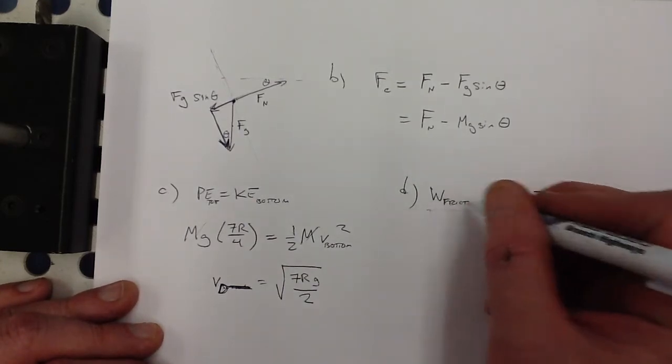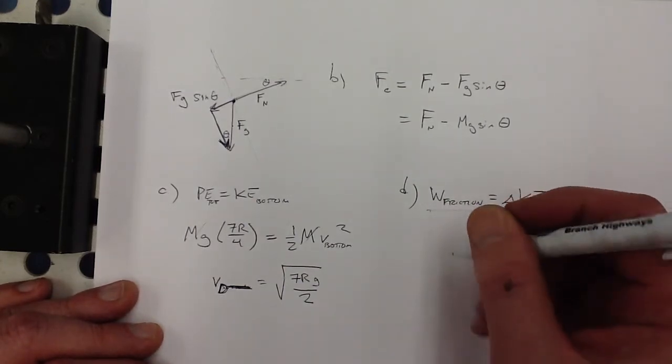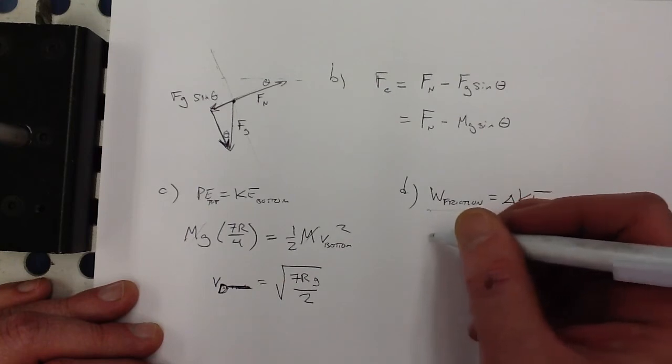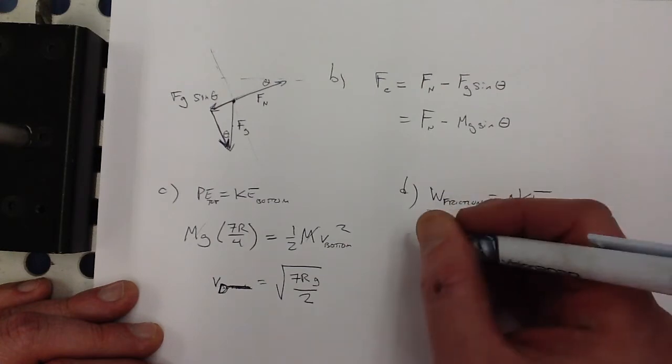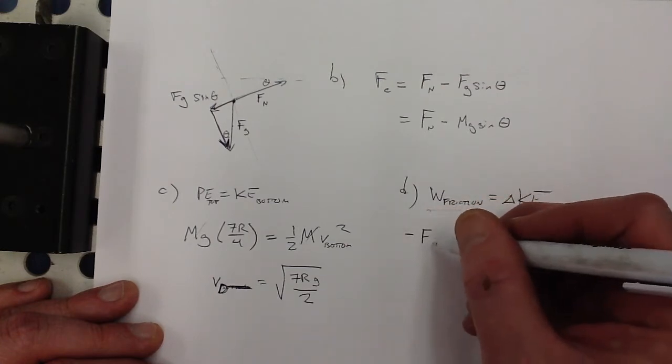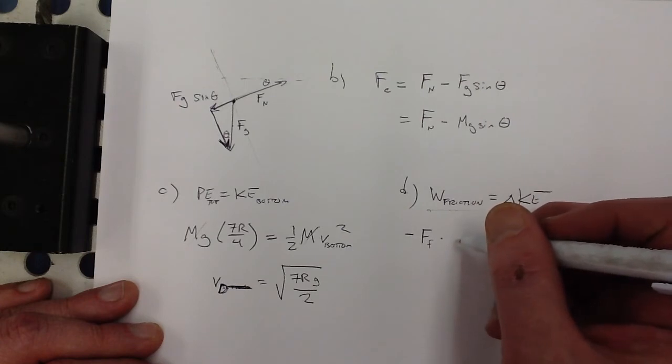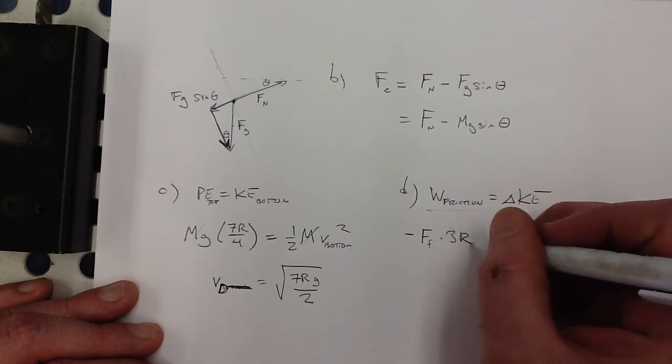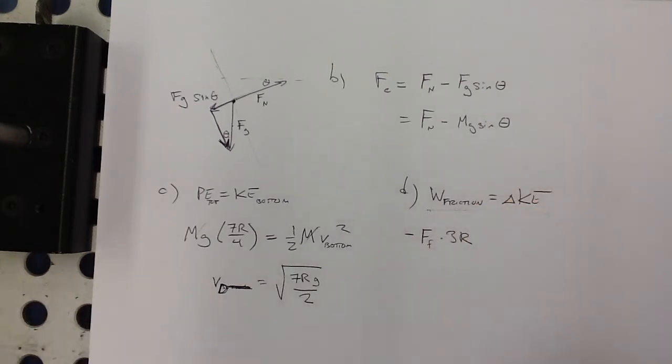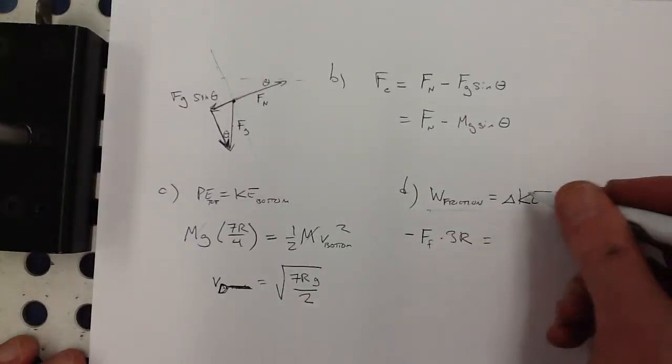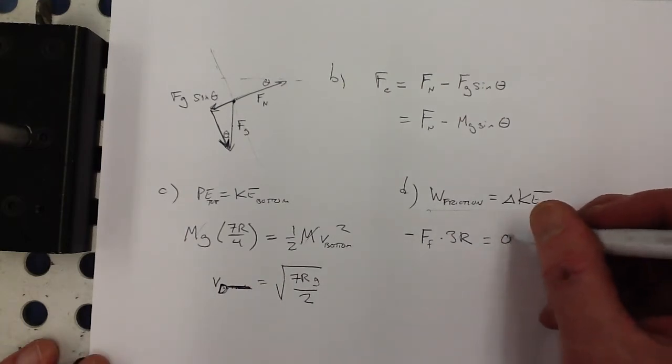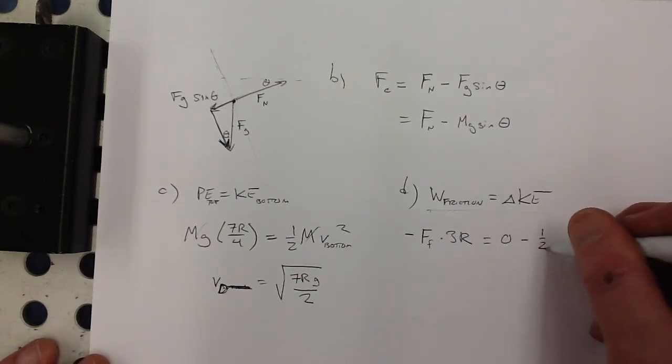Now, work done by friction, that's force times distance. So, let's see. The work done by friction will be negative work. That's the frictional force times the distance which is 3R, right, according to the picture. From D to E, that's a distance of 3R and that's equal to the change in kinetic energy. Well, the final kinetic energy is zero and the initial kinetic energy is one-half M times the velocity at D squared.